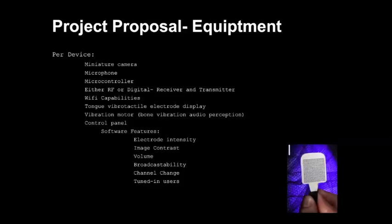Some of the equipment necessary per device will include a miniature camera, a microphone, a microcontroller, either an RF or digital receiver and transmitter with Wi-Fi capabilities, a Tongvi tactile electrode display, a vibration motor for bone vibration audio perception, and a control panel. The control panel software features will include electrode intensity, image contrast, volume, broadcast ability, channel change, and tuned-in users.